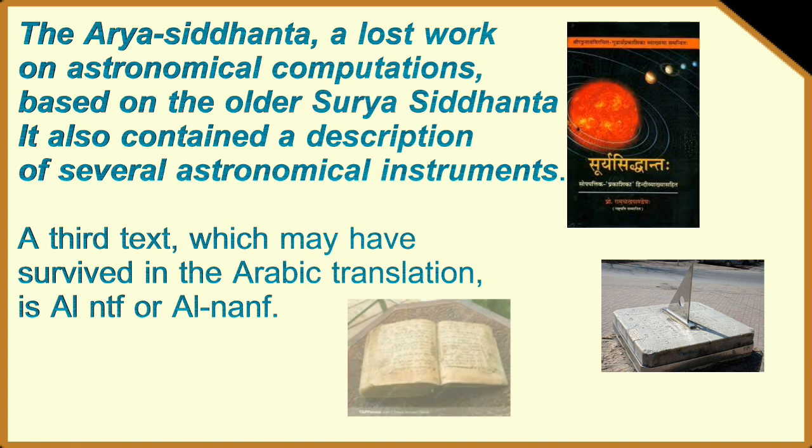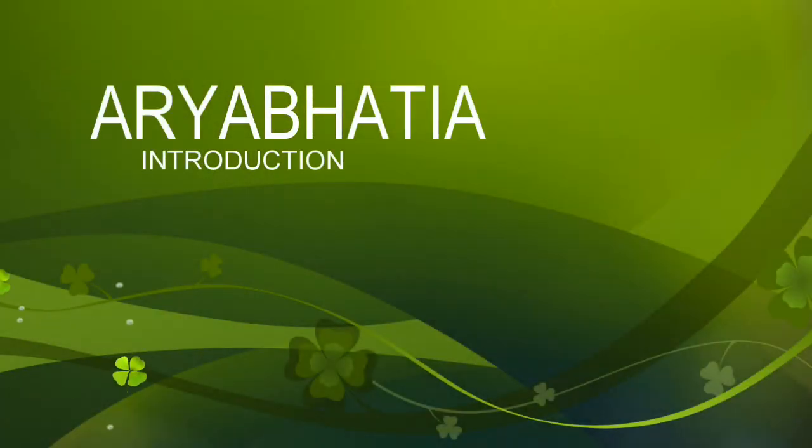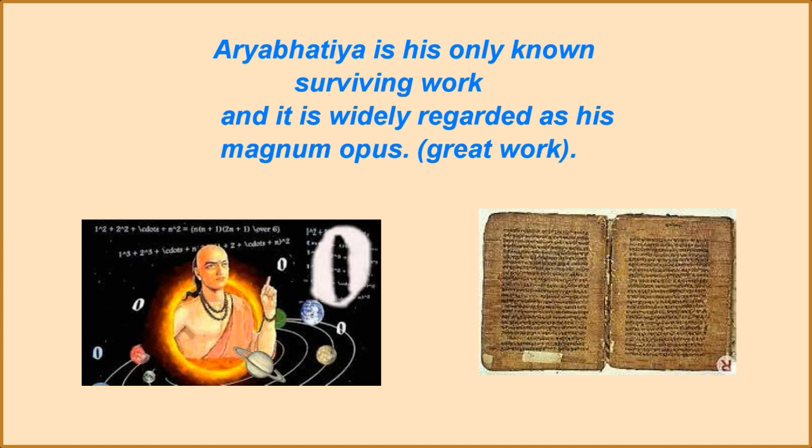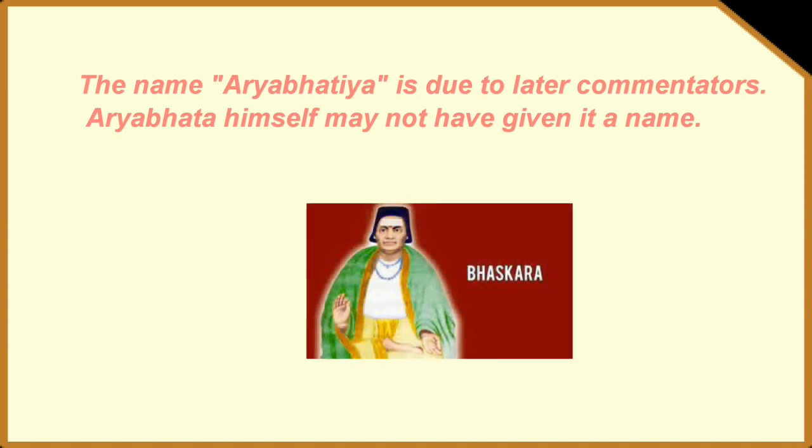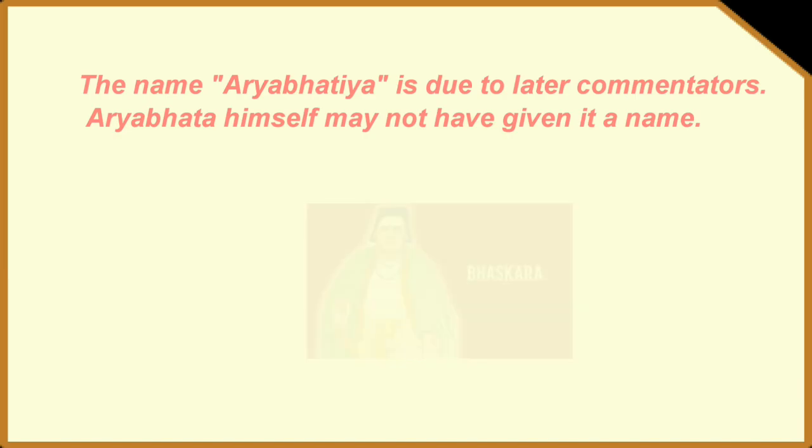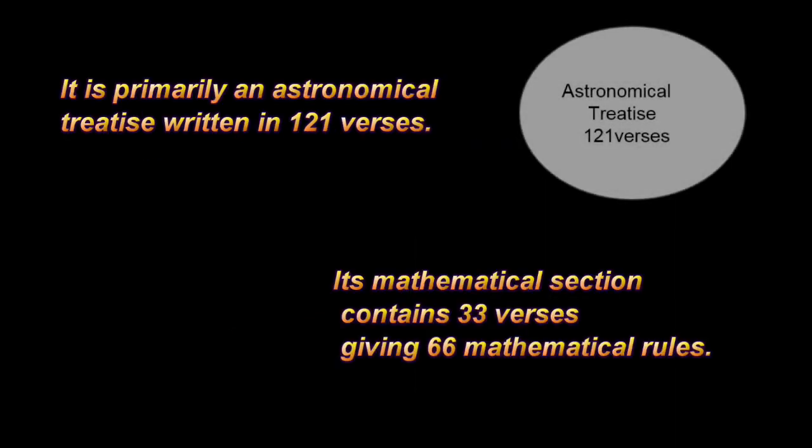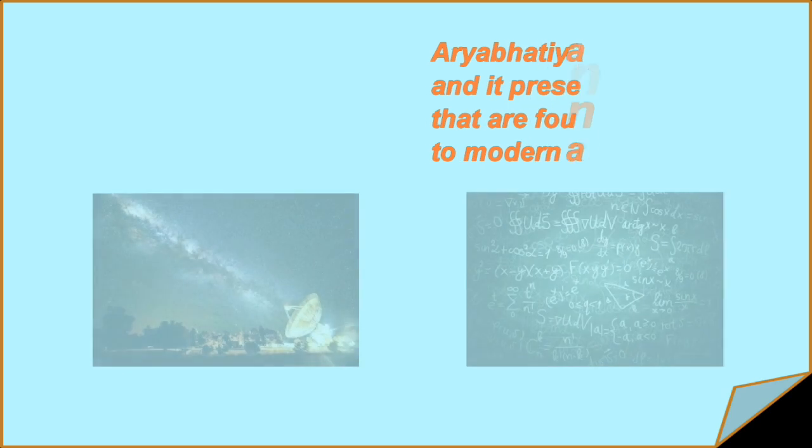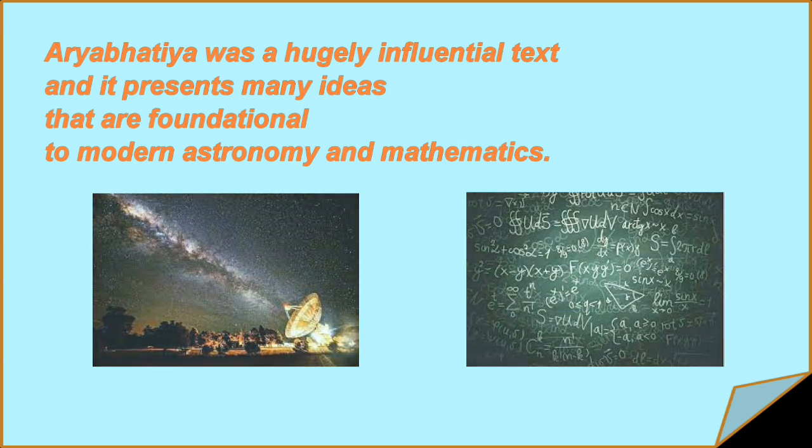A third text, which may have survived the Arabic translation, is Al Nanf. Aryabhattiya is his only known surviving work and it is widely regarded as his magnum opus, Great Work. The name Aryabhattiya is due to later commentators. Aryabhata himself may not have given it a name. He was only 23 when he wrote his book. It is primarily an astronomical treatise written in 121 verses. Its mathematical section contains 33 verses giving 66 mathematical rules. Aryabhattiya was a hugely influential text and it presents many ideas that are foundational to modern astronomy and mathematics.